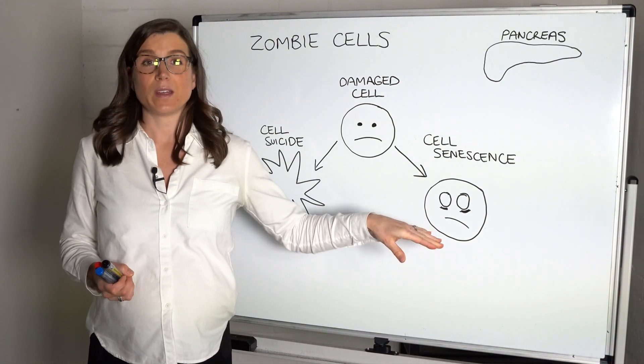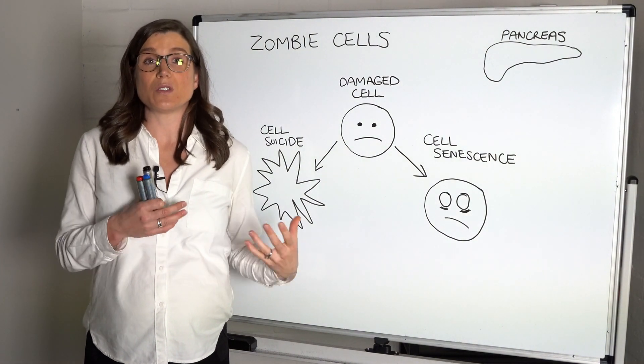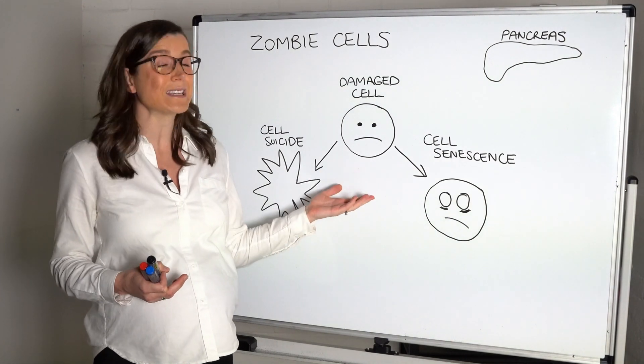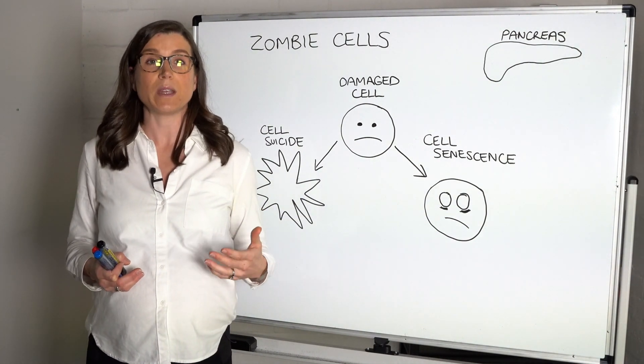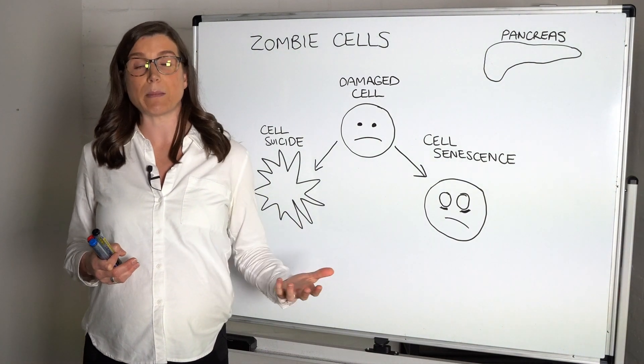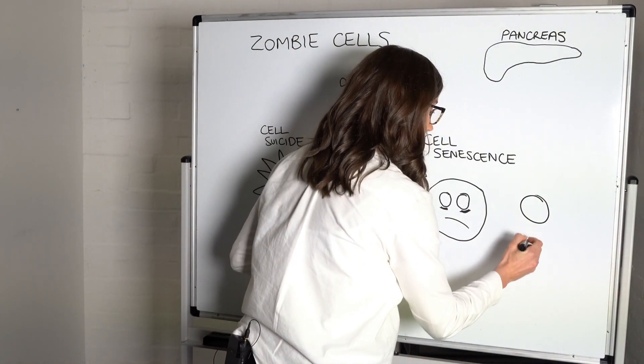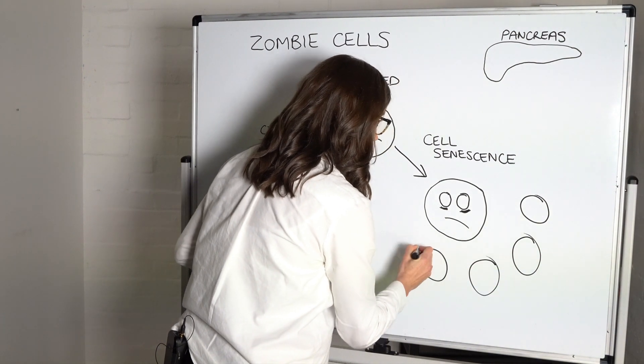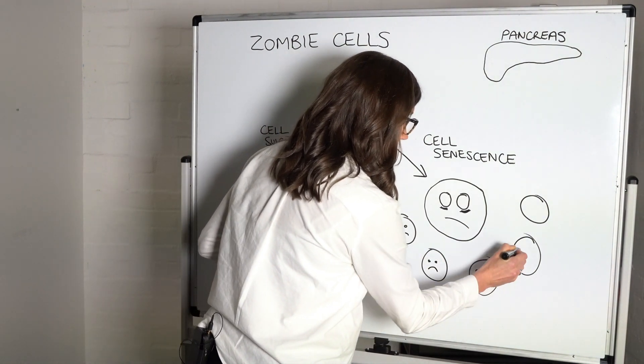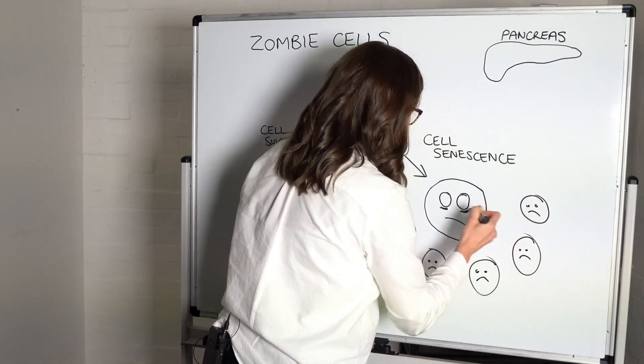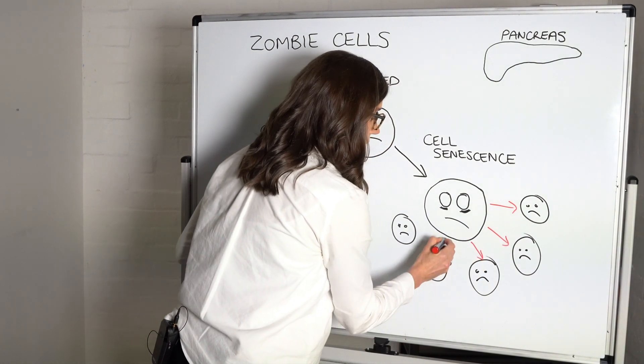However, this zombie cell—what it actually does—it's not dead, it's still there, it's still active, it's just not doing what it's normally meant to do. So for example, if it was a beta cell that was meant to produce or secrete insulin, it no longer does that. It doesn't function like a normal cell. It just sits there and it can secrete inflammatory molecules, and so what it can actually do is disrupt all its neighboring cells.